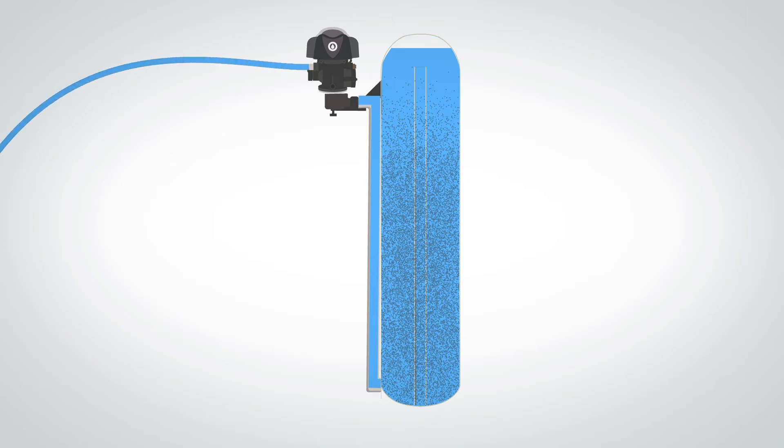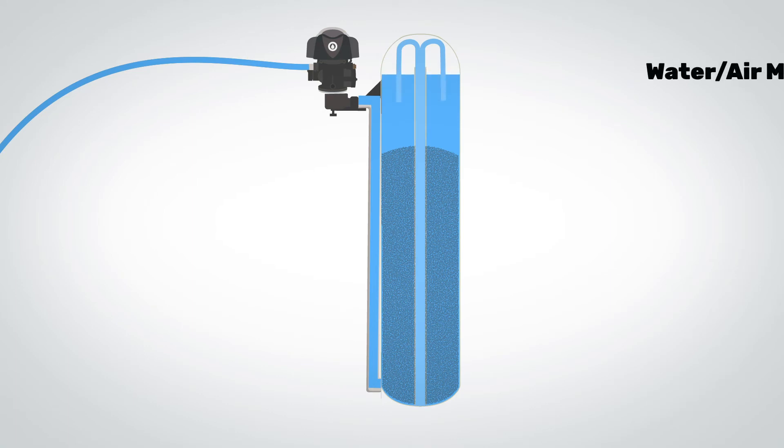After the backwash comes the air replenish step. During this step, water is driven through an air injection assembly, which creates suction to pull in fresh air, similarly to how a softener draws in brine. This mixture of air and water is directed up the riser tube and down through the media bed, replenishing the pocket of air at the top of the tank.